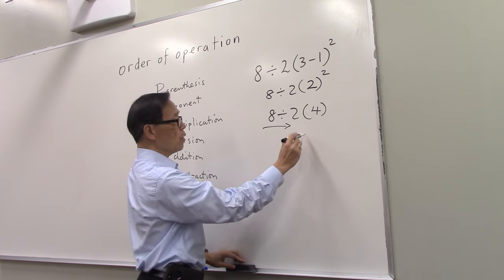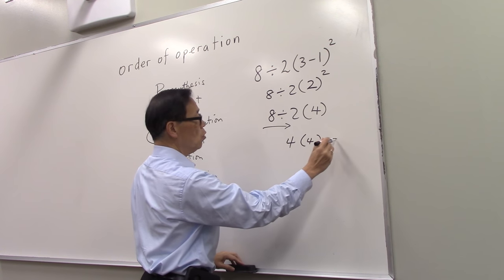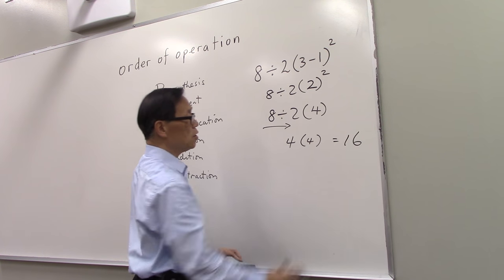So, 8 divided by 2 is 4. And then, 4 times 4 would be 16. This is the correct answer.